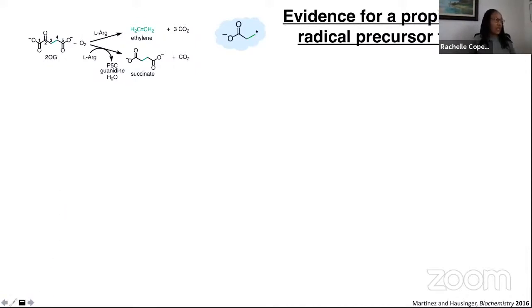We decided to look at 2-OG analogs, one of which is 2-oxoadipate. 2-oxoadipate is just like 2-OG except it has an additional methylene unit, which means that if it were to proceed via the same mechanism, we would form a butyrate radical. That butyrate radical would not be able to undergo another beta-scission event in the way that the propionyl radical would, and so we might be better able to observe alternative products.